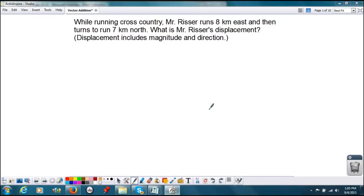All right, in this problem we are asked, while running cross-country, Mr. Risser runs 8 kilometers east and then turns to run 7 kilometers north. What is Mr. Risser's displacement?